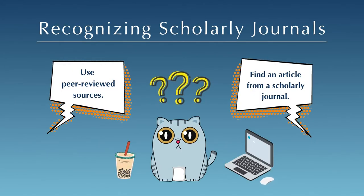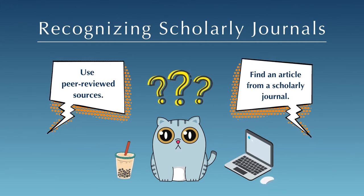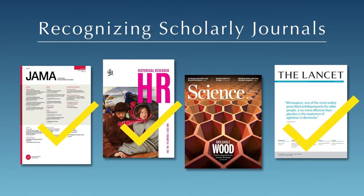When you get an assignment, your professor may instruct you to find an article from a scholarly journal or to use peer-reviewed sources. Articles published in scholarly journals have been analyzed and evaluated by other scholars or experts in their field. This is why scholarly journals are often called peer-reviewed journals.